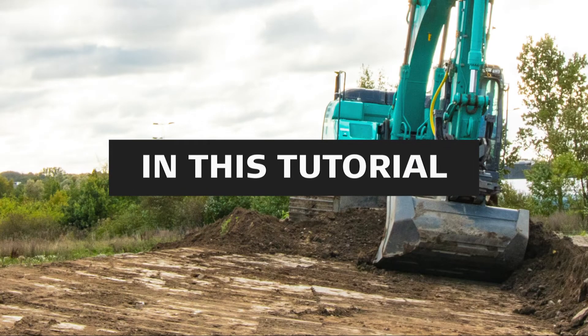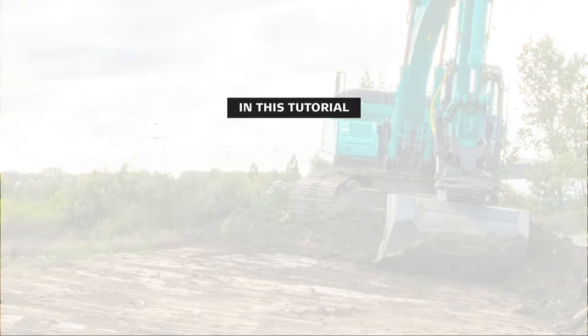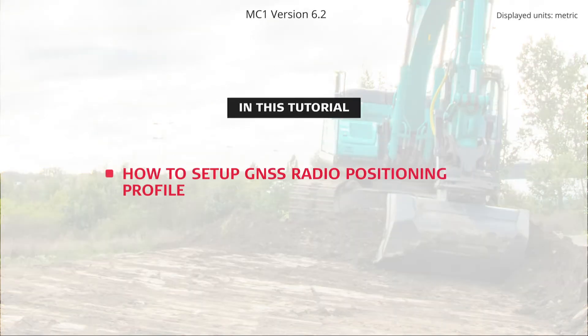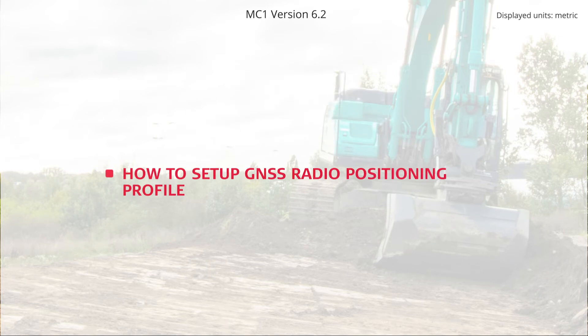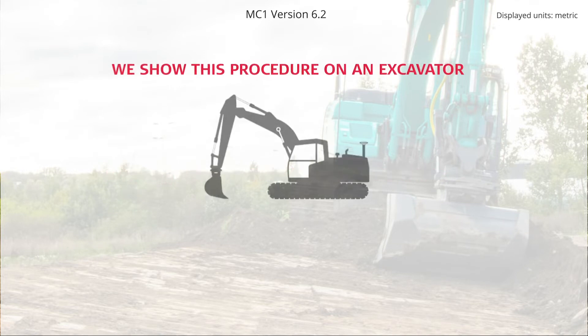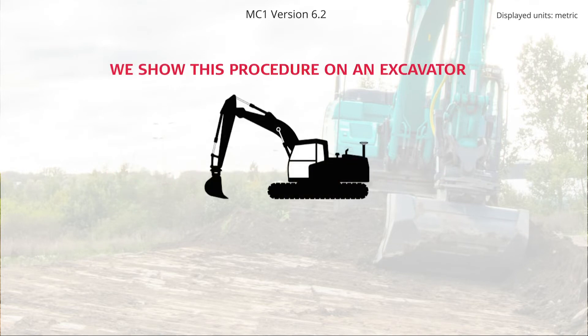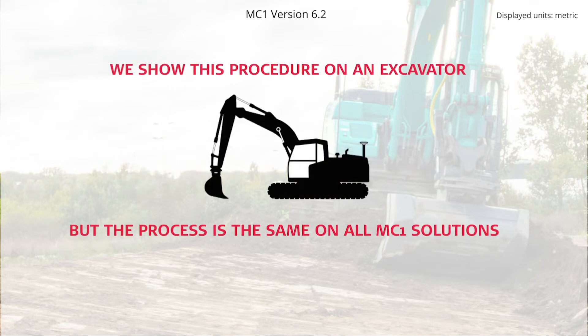Hi, in this video you will learn how to set up your GNSS receiver to get RTK corrections from a base station using radio connection. We show this procedure on an excavator, but the process is the same on all MC1 solutions.